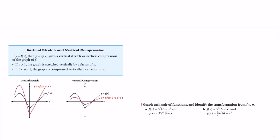The next type of transformation is vertical stretch and vertical compression. If y is equal to f of x, then y is equal to a times f of x gives a vertical stretch or vertical compression of the graph of f. If a is greater than 1, the graph is stretched vertically by a factor of a. If 0 is less than a less than 1, the graph is compressed vertically by a factor of a.